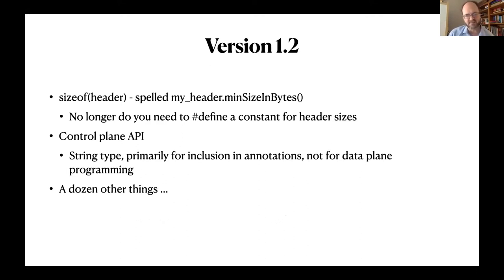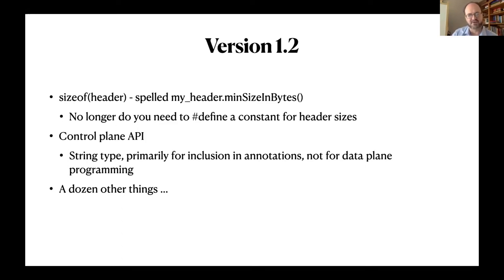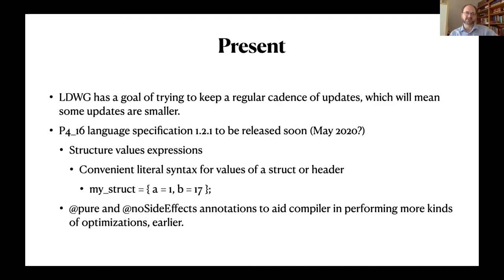Now you can just say sizeof whatever header you defined and the compiler will calculate it for you for fixed-size headers — a nice programmer convenience that you only feel when it's not there. A string type was also added for control plane API annotations, not for data plane use. There were a lot of other smaller things which I won't get into.